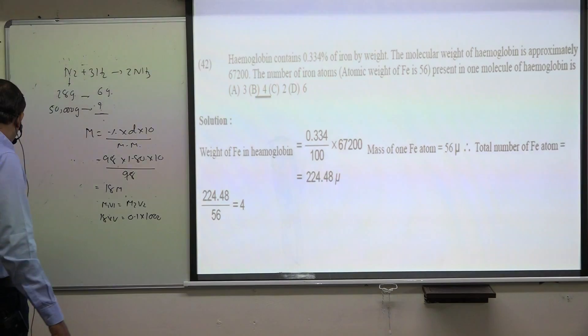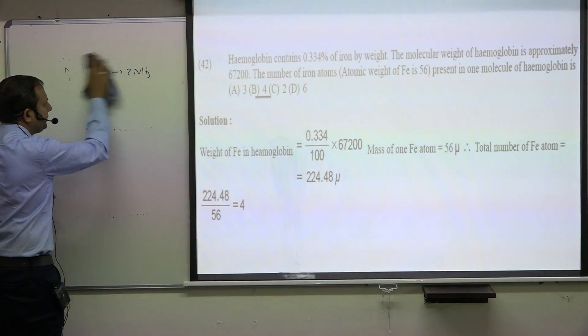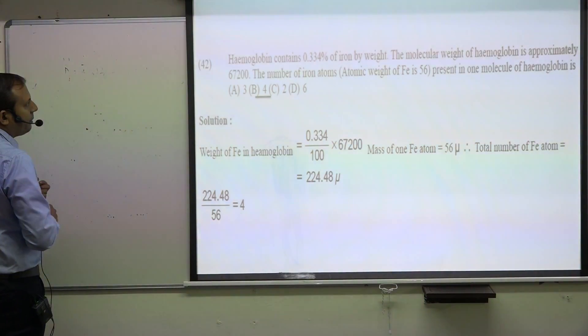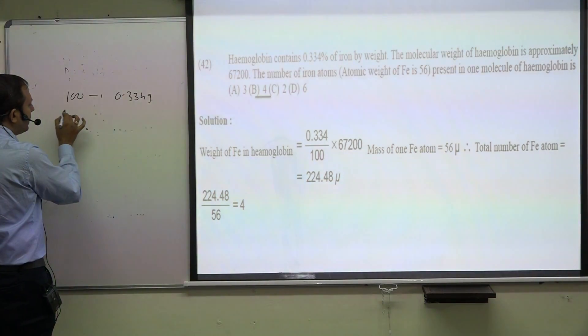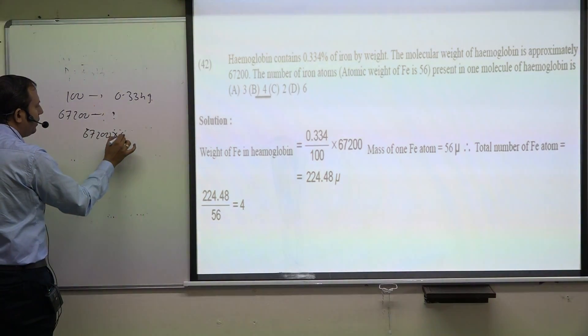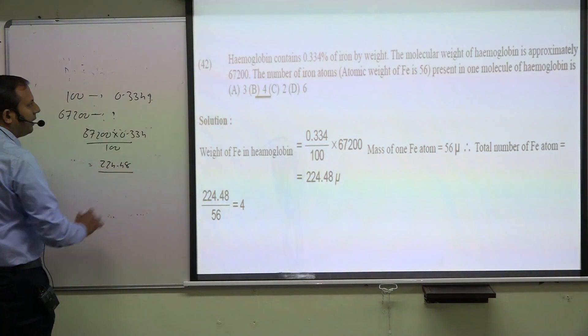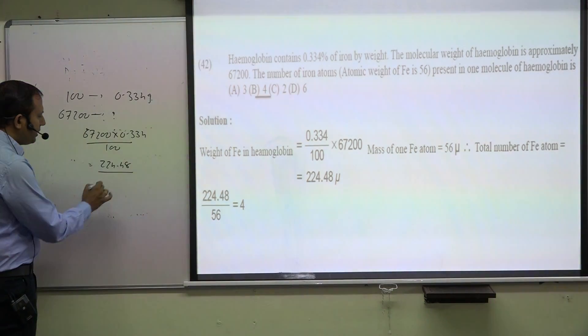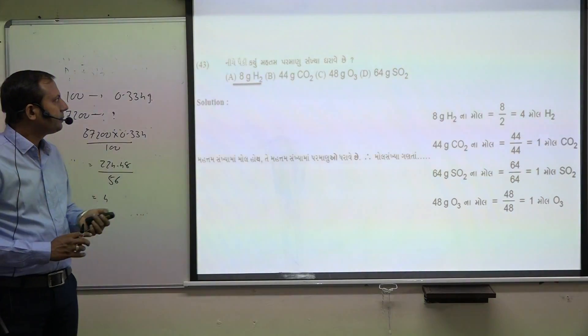When 0.33 percent means in 100 grams, 0.33 grams is present. For 67,200 grams: 67,200 times 0.334 divided by 100 equals approximately 224.48. The atomic mass of iron is 56, so dividing gives 4. Therefore, 4 iron atoms are present.